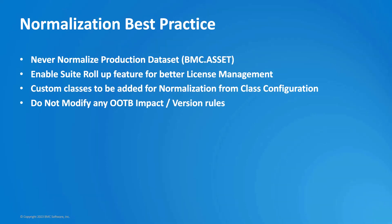Let me talk about a few best practices for normalization. First, never normalize the production dataset (BMC.asset) — run normalization only on CIs in a staging dataset, then reconcile into BMC.asset. Second, use the suite rollup feature for better license management. Third, if you create a custom class, you'll need to manually add it for normalization via the normalization class configuration. Last, do not modify any out-of-the-box impact or version rules — create your own custom rules instead.